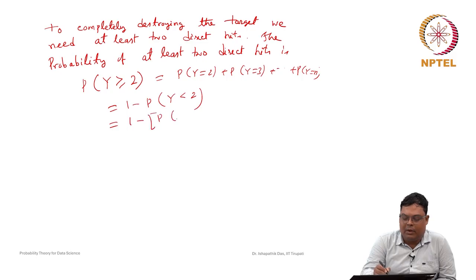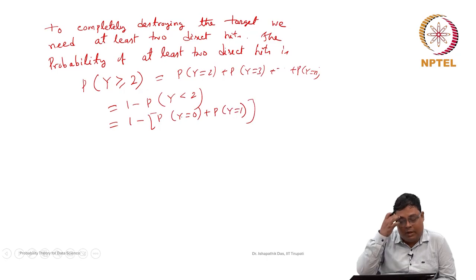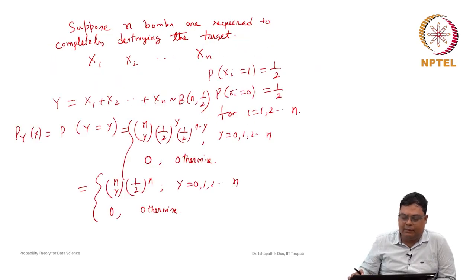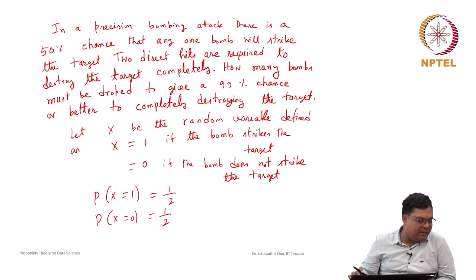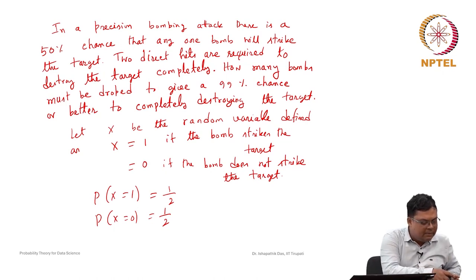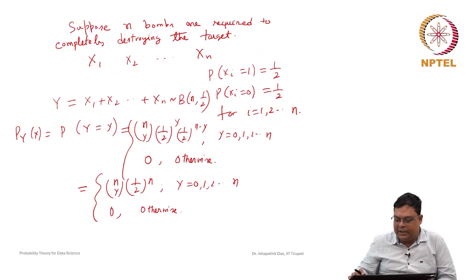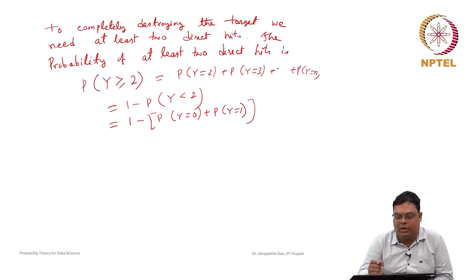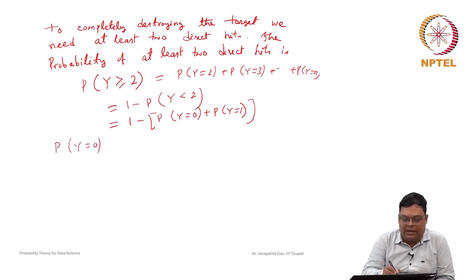So this is nothing but 1 minus the probability that Y equals 0 plus probability Y equals 1. These are the two probabilities we have to compute. It is asked that this probability should be greater than or equal to 99 percent. Whenever this probability of Y greater than or equal to 2 is at least 99 percent, we have to solve for how many bombs n we need.